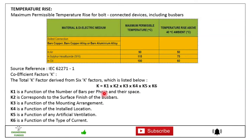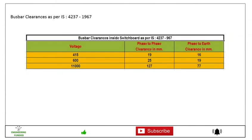Let's say coefficient factor K. The total K factor derived from 6 K factors which is listed below. So in order to calculate total K factor, K is equal to K1 into K2 up to K6, where K1 is the function of the number of the busbars per phase and their space, K2 corresponds to the surface finish of the busbar, K3 is the function of mounting arrangement, K4 is the function of install location, K5 is the function of any artificial ventilation, K6 is the function of type of current.